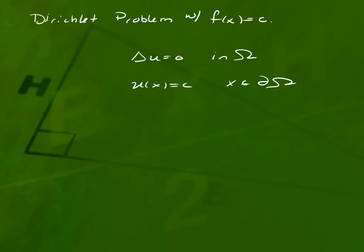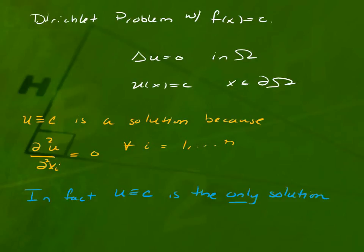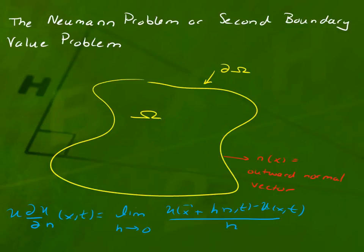Omega could be a set in R^n. Notice that if I take u identically equal to the constant, it's a solution, because if I take the second derivative of a constant, it's zero. So it satisfies the equation and it satisfies the boundary condition. In fact, it turns out that for this particular problem, the constant solution is the only solution. And that's where maximum principles come in. They actually can prove that for you.